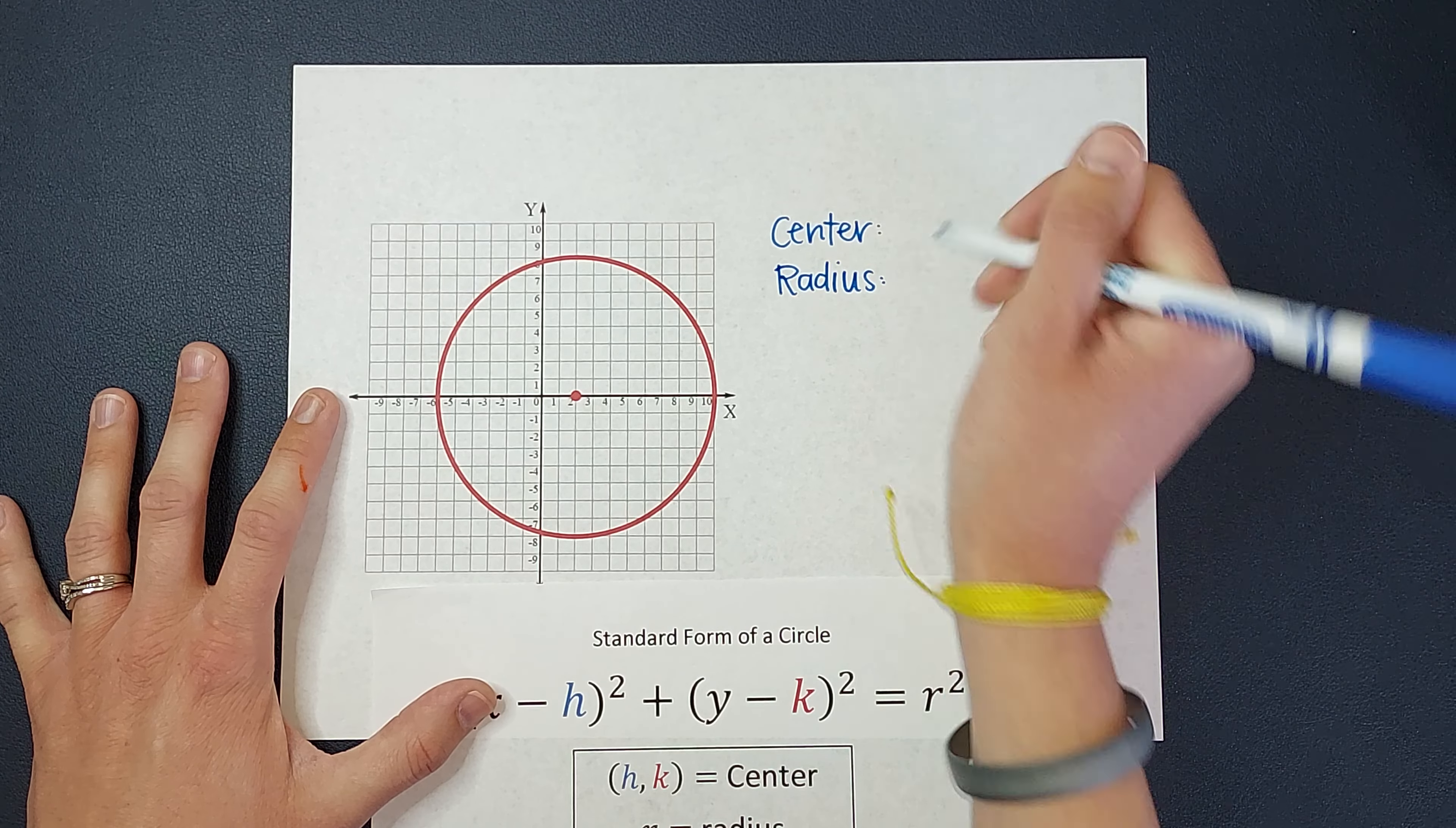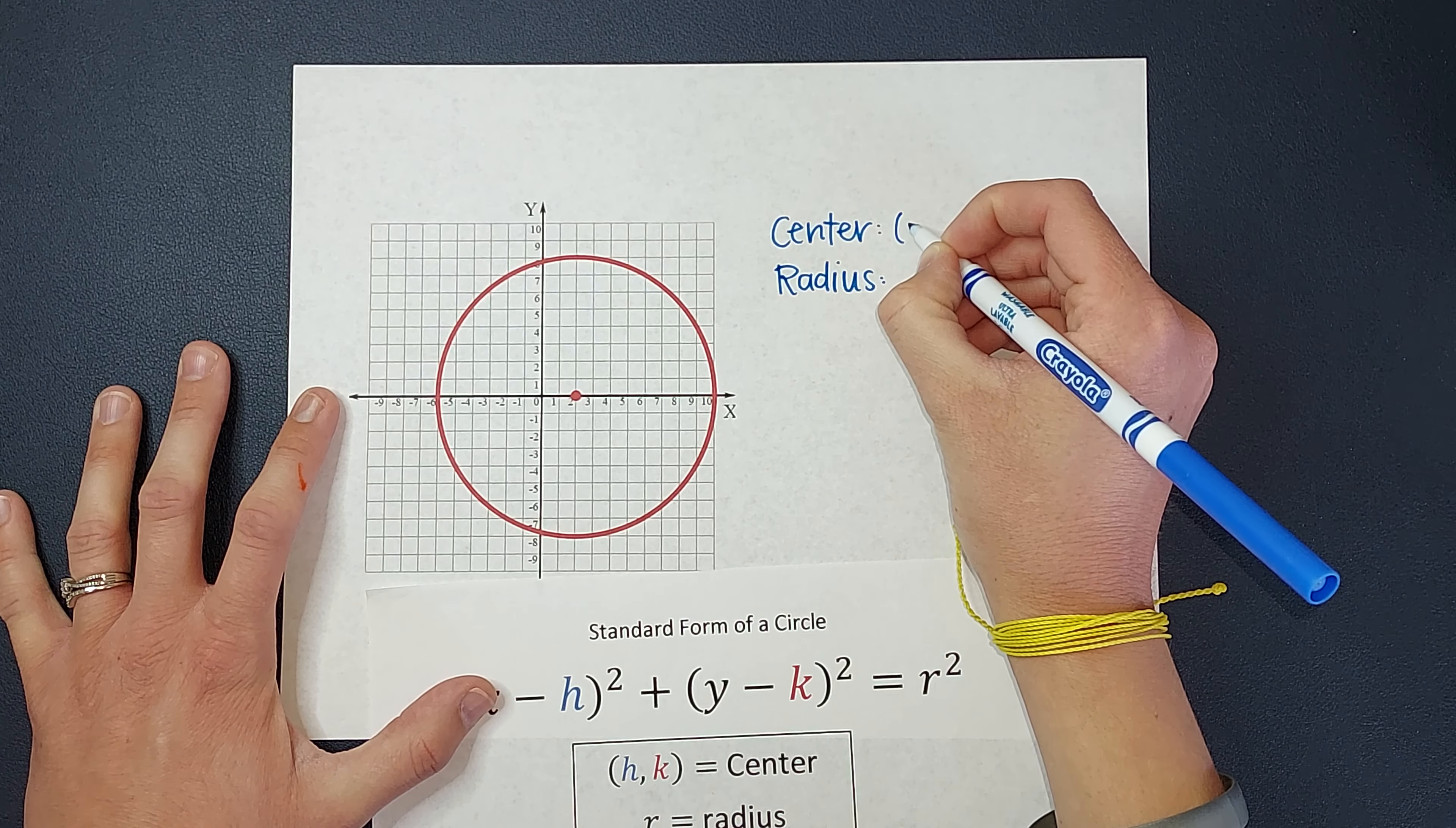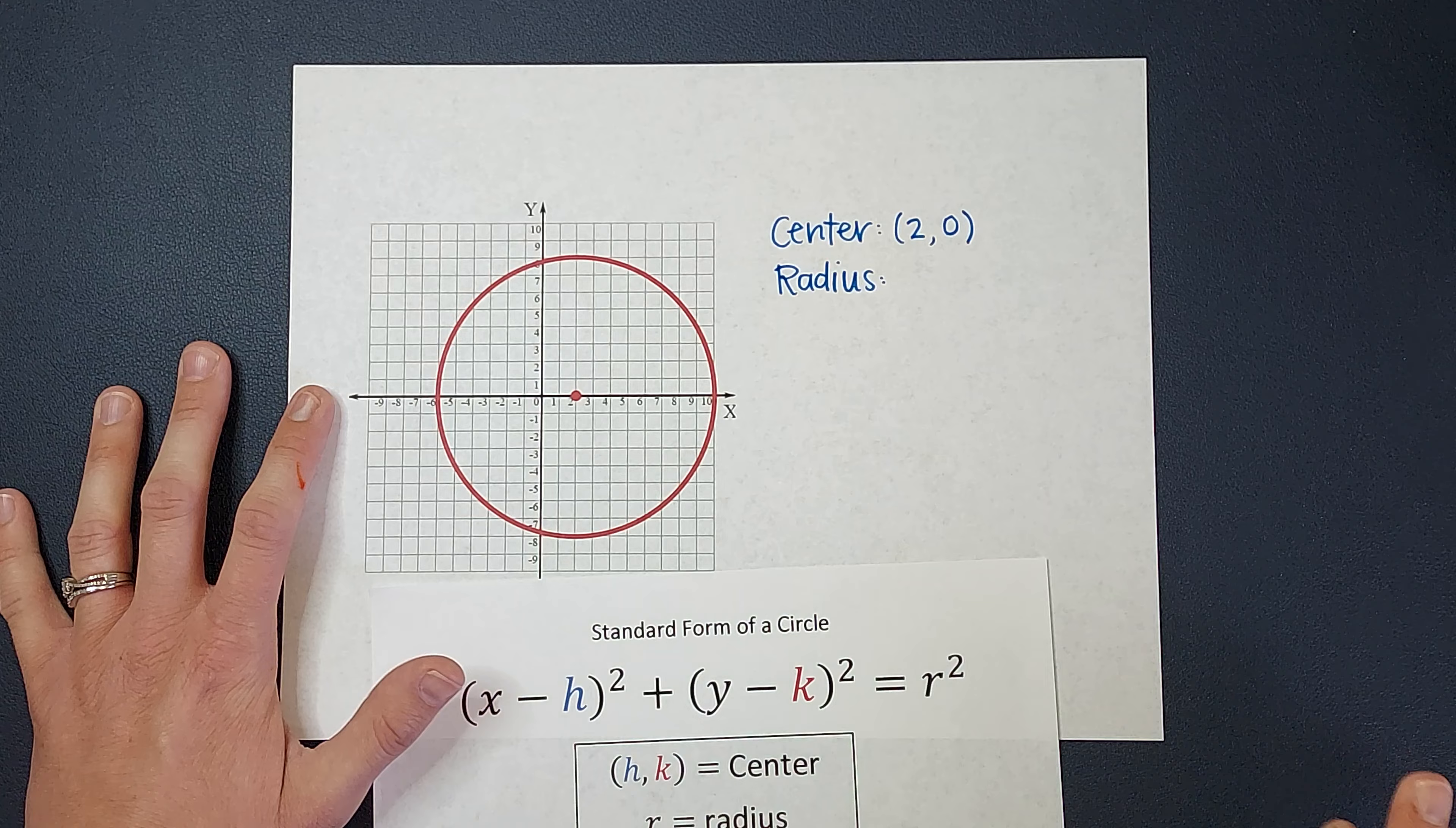So the center is pretty easy. It's already labeled there for us. My center is, we go to the right 2 and then we don't go up and down at all. So that would be 2, 0. That is the ordered pair for that point.